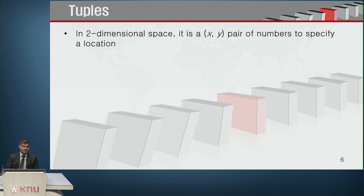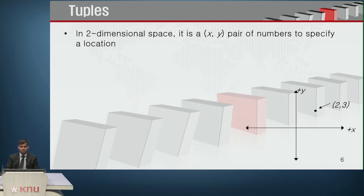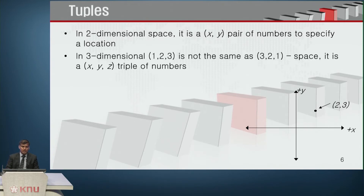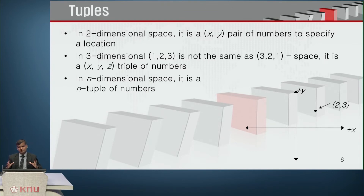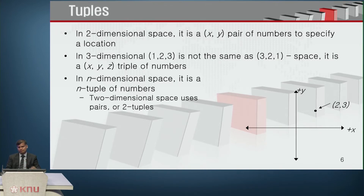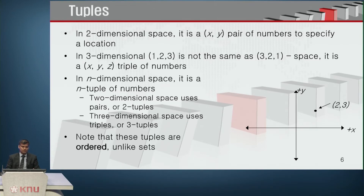Tuples: in two-dimensional space, it is an x-y pair of numbers used to specify a location — like a coordinate. In the x-y plane, for example, we have (2, 3). In three-dimensional space, (1, 2, 3) is not the same as (3, 2, 1) — it is an x-y-z triple of numbers. For n-dimensional space, it is an n-tuple of numbers. Two-dimensional space uses pairs or two-tuples. These tuples are ordered, unlike sets.